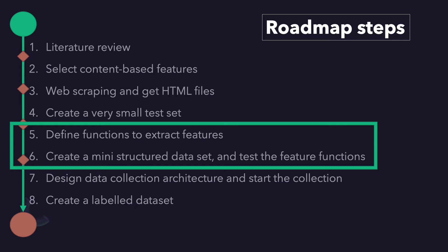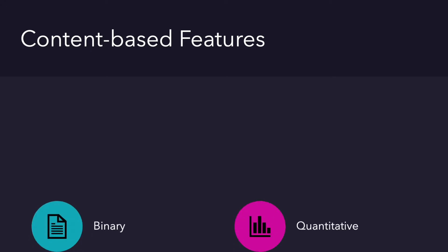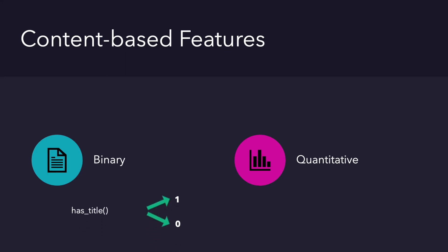This will be enough, but you can always think of other content-based features. I divided our features into two different types. Some of them will have only one or zero as a value — that means they are binary features.